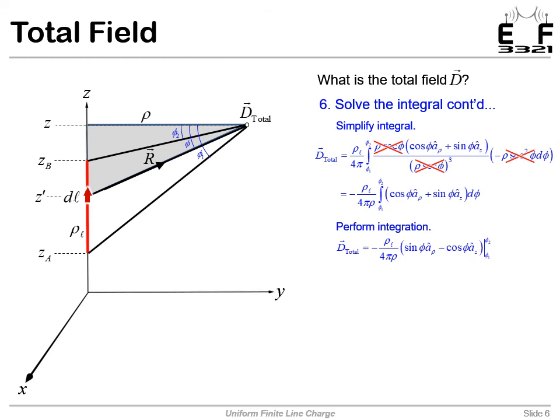So if we go ahead and do that, we still have this constant to the outside. We've calculated the antiderivative of what was inside the integral. And now we need to evaluate it at phi2 and phi1 and then subtract those answers.